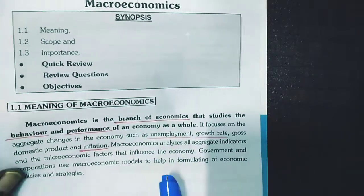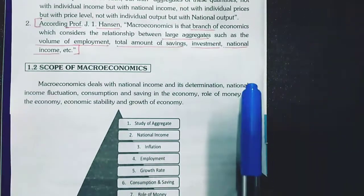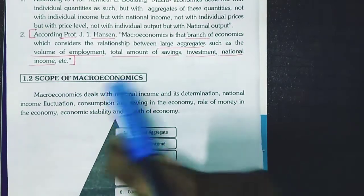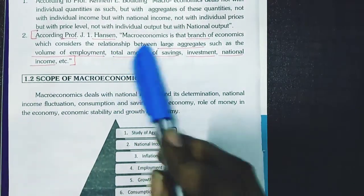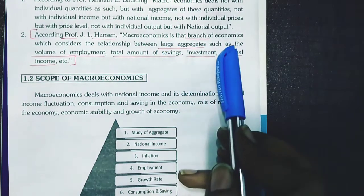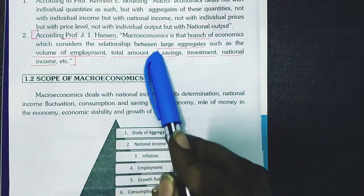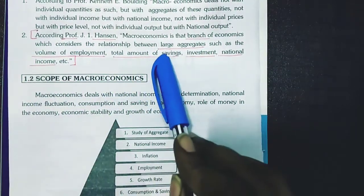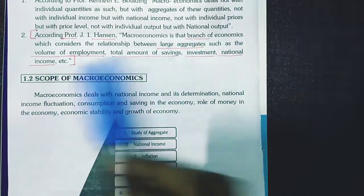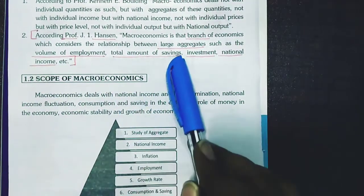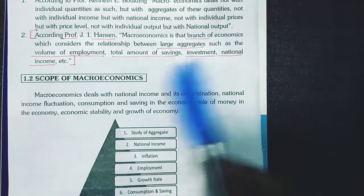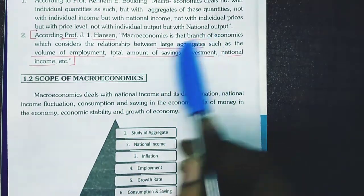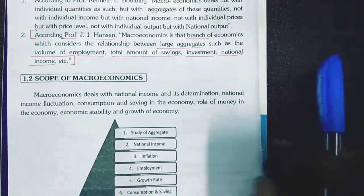We are going to understand the definition of macroeconomics given by Professor J. Hansen. Professor J. Hansen says that macroeconomics is the branch of economics which considers the relationship between large aggregates such as volume of employment, total amount of savings, investment, national income, etc. Remember two key points in this definition: branch of economics and large aggregates.